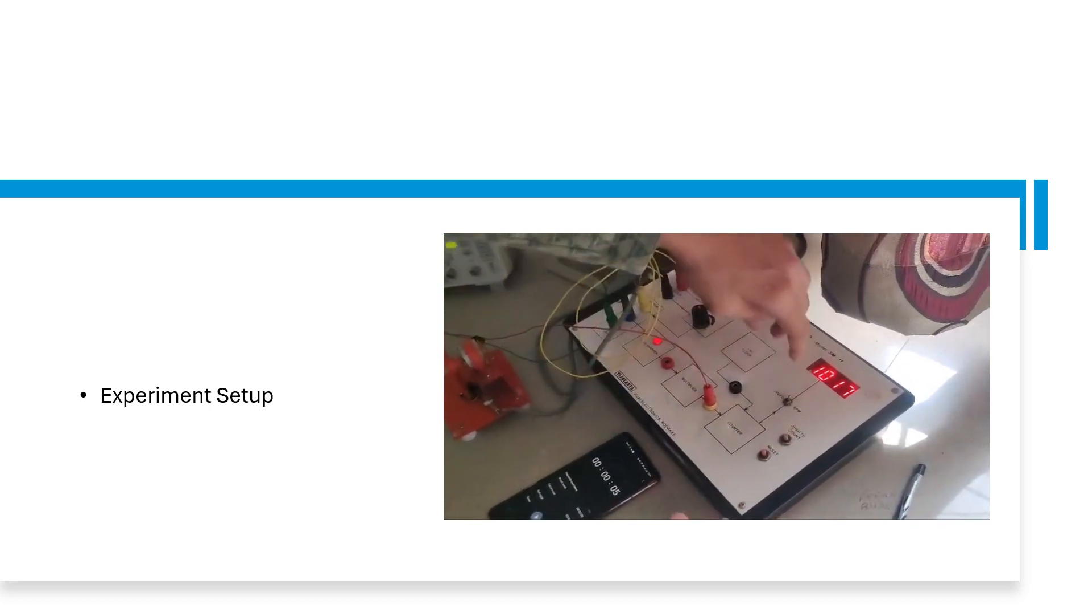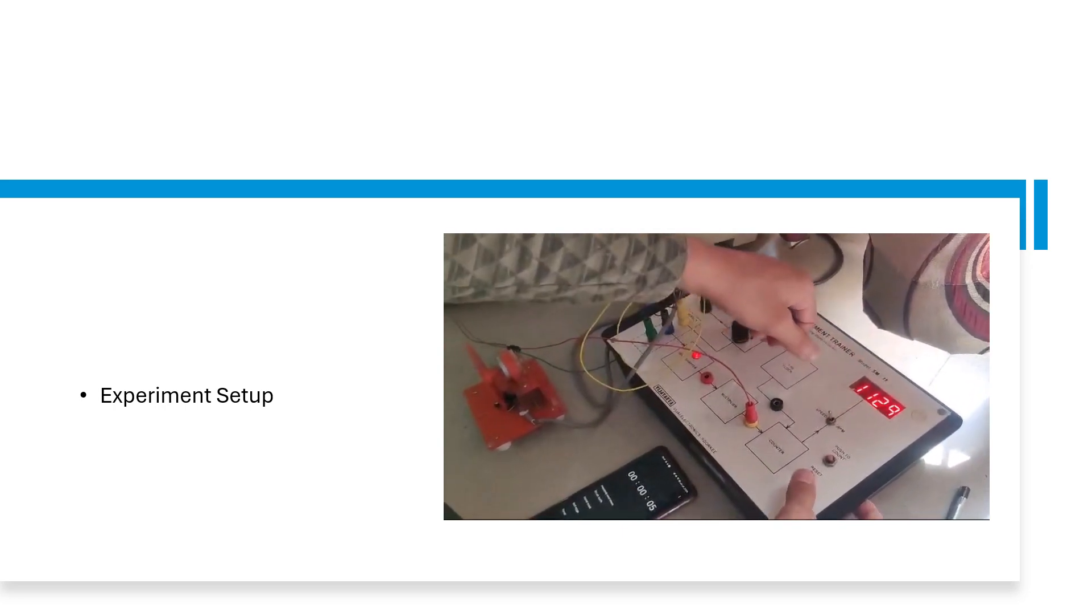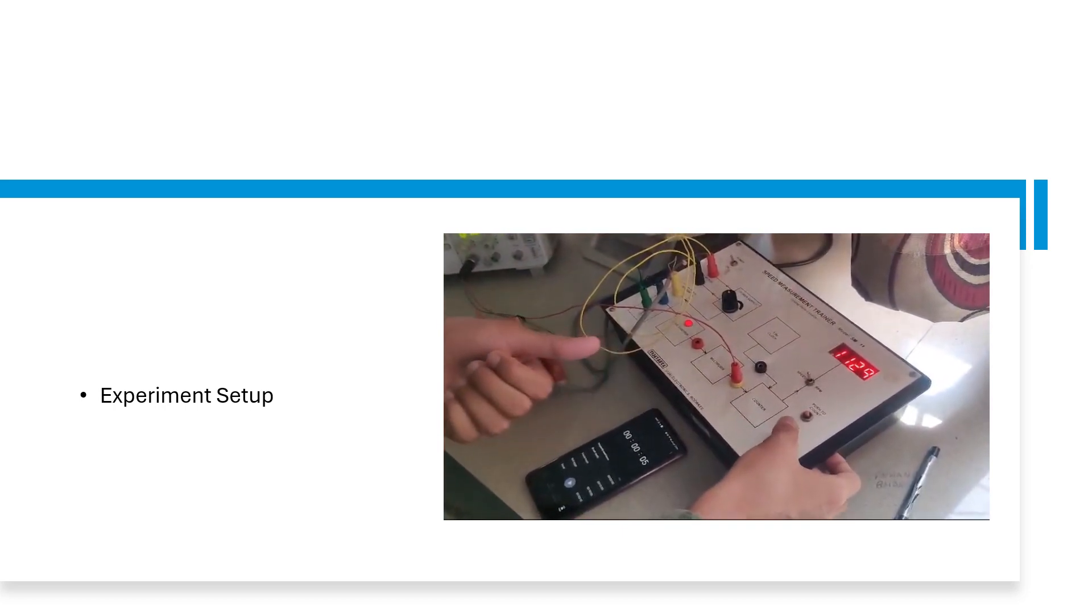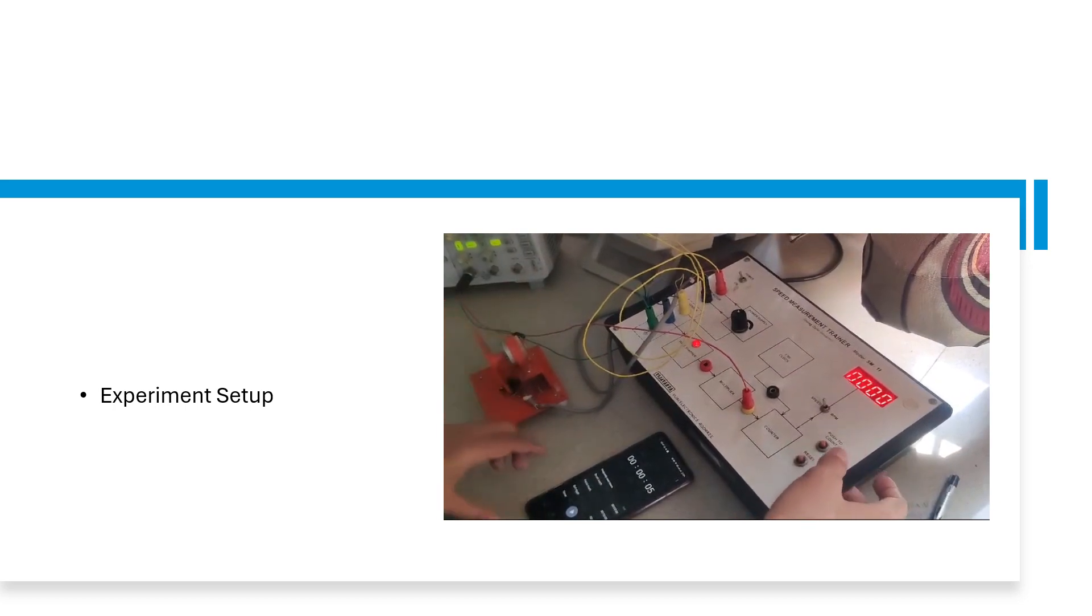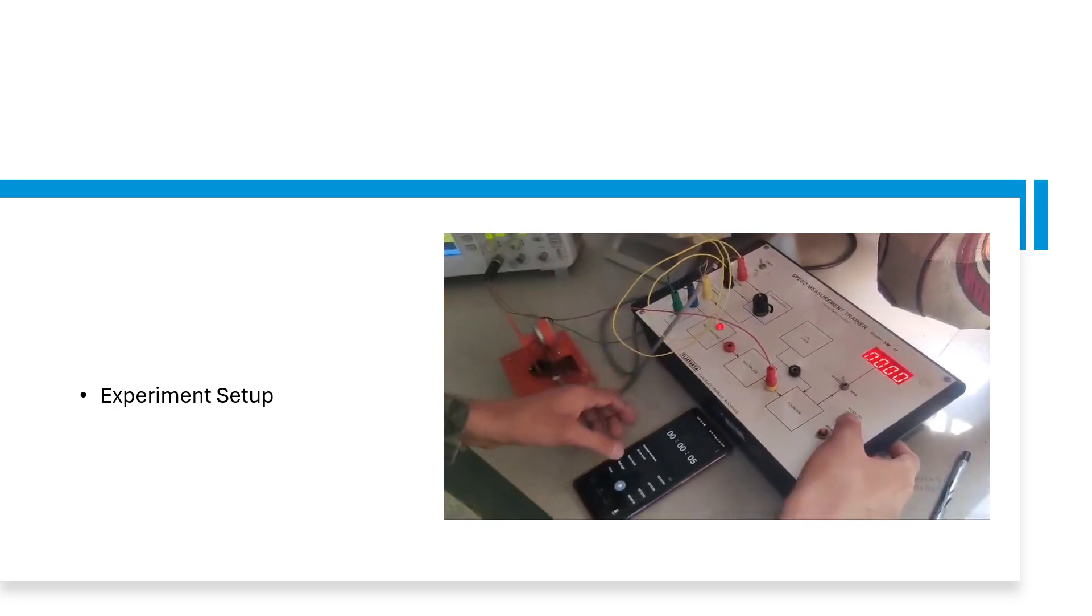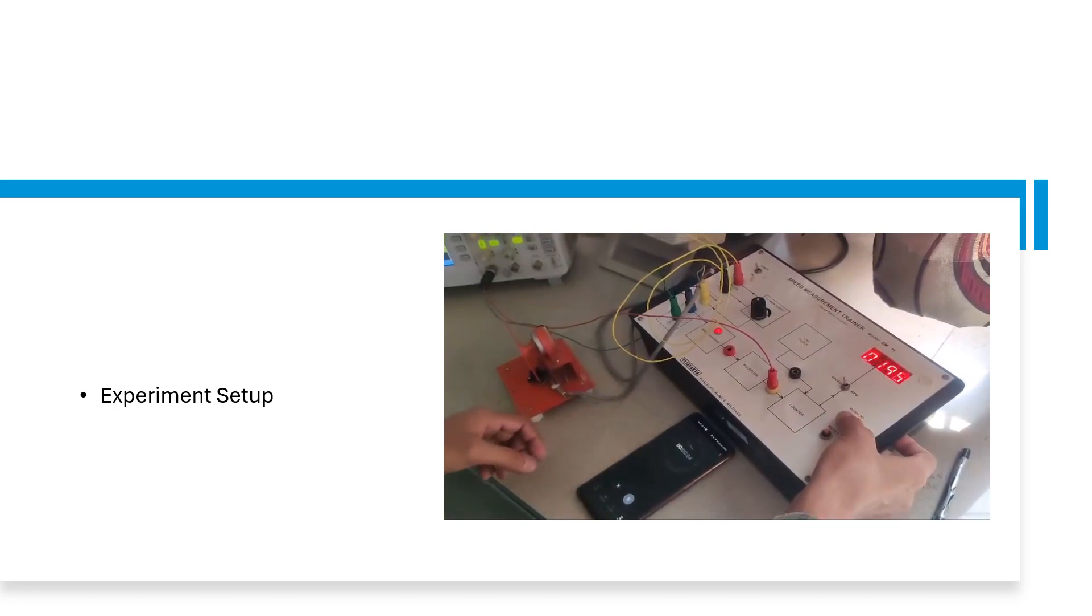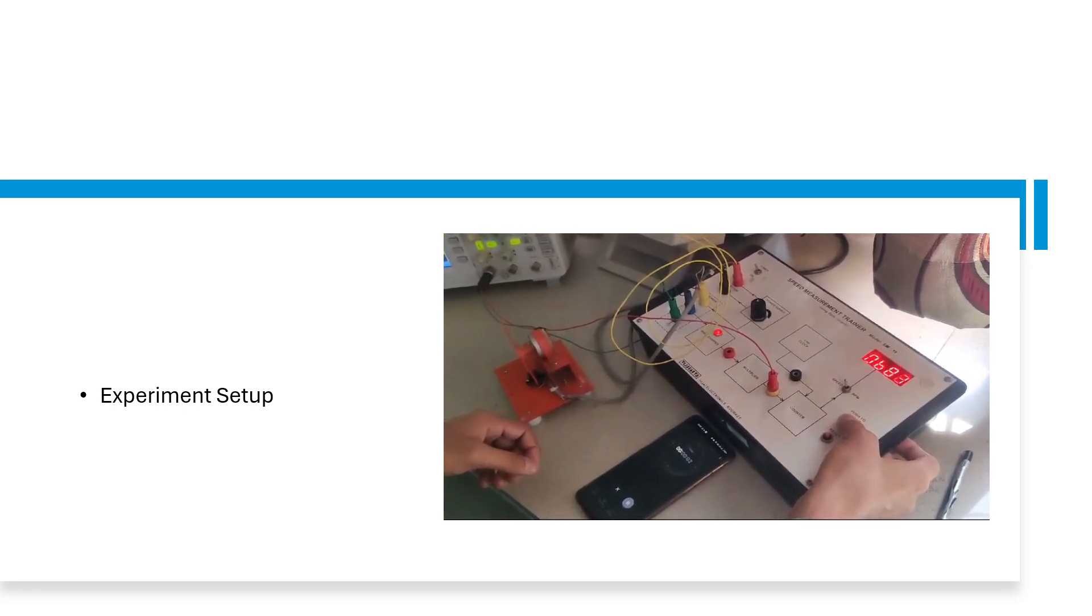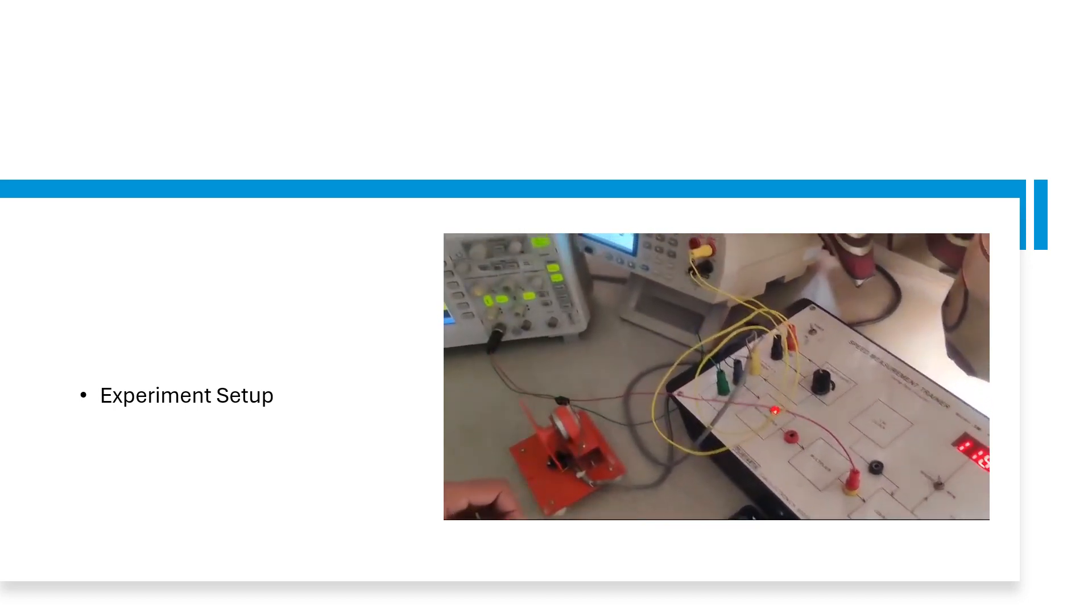Now we will take the reading for speed measurement trainer kit. So to take the reading we have to reset first. Then we will set the timer for 5 seconds. And then we will push to count. And here we are counting the teeth that cross the optical plane.